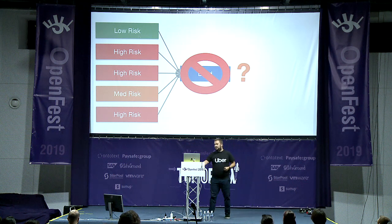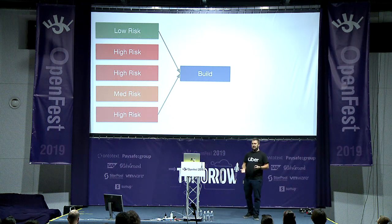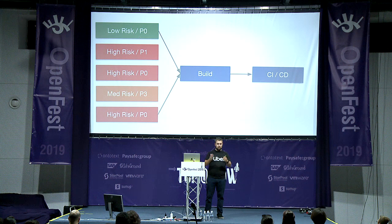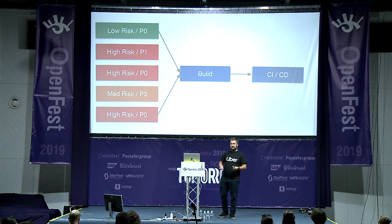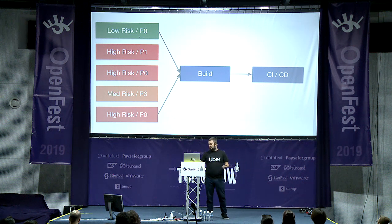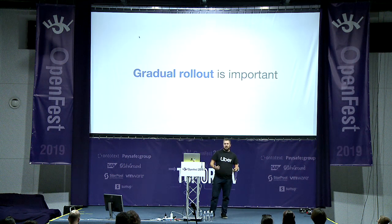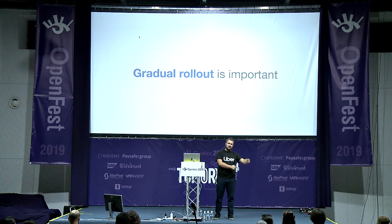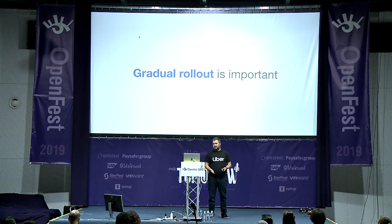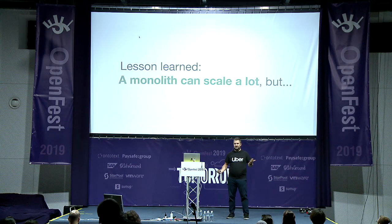It's a solvable problem though. You just ask the engineers to tag their commits with how risky they are — low risk, medium risk, high risk — and then when you deploy the monolith you just pick the ones you like. You also use continuous integration and continuous delivery to run tests and deploy to production. It's very important to roll it out gradually: first five percent in one data center, five percent in another, then ten percent, and so on. So the deployment is a problem you can solve easily.